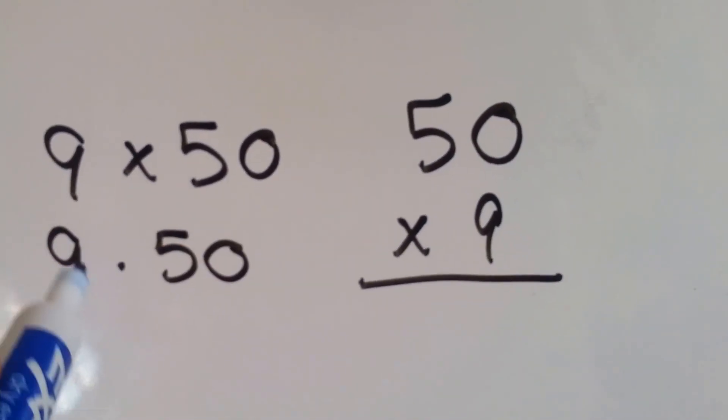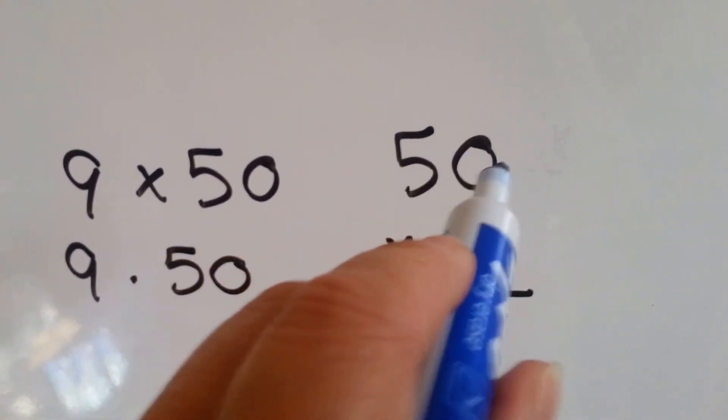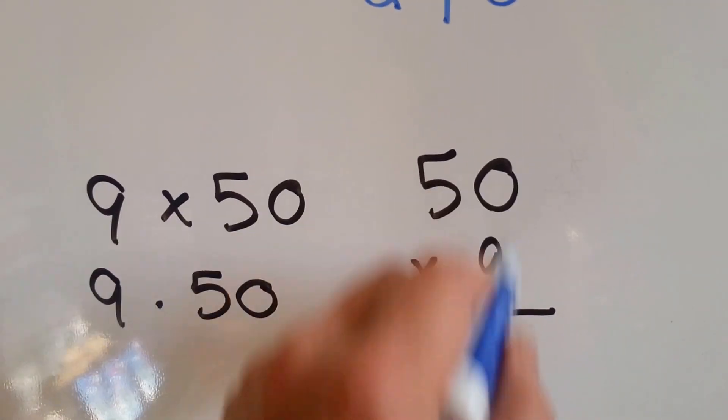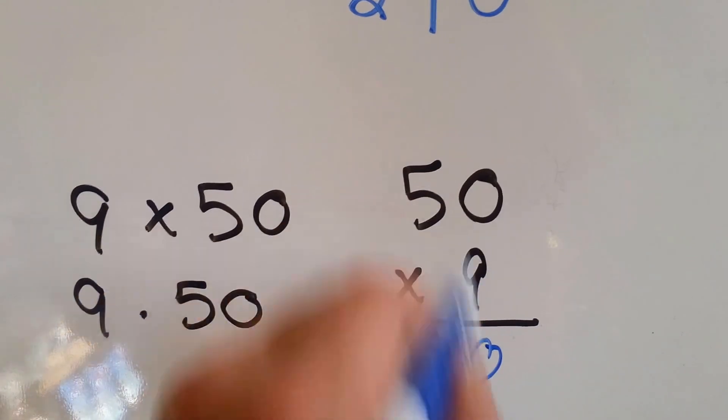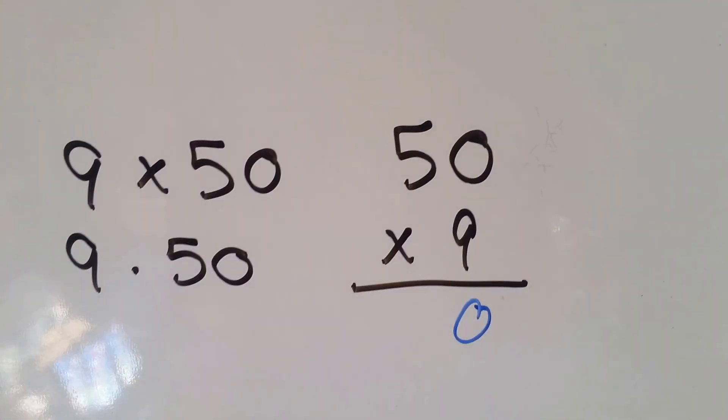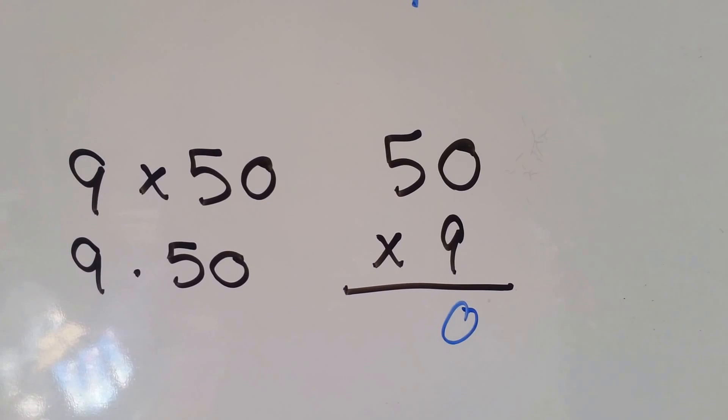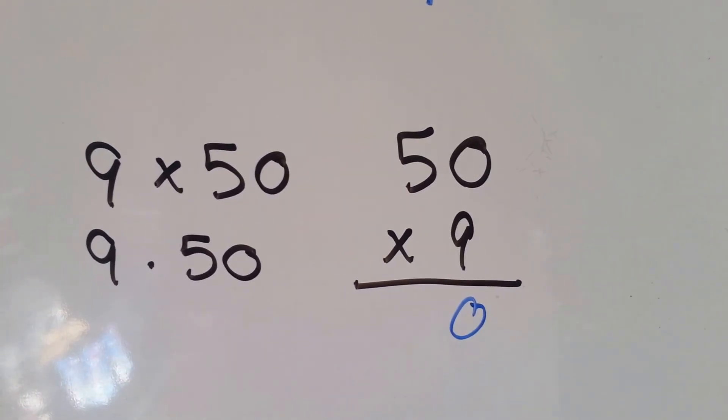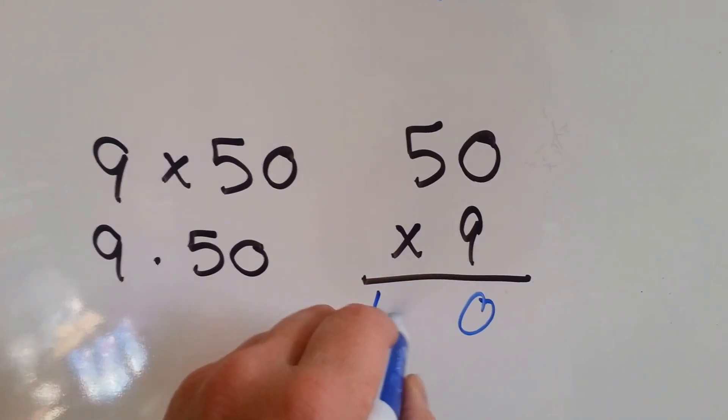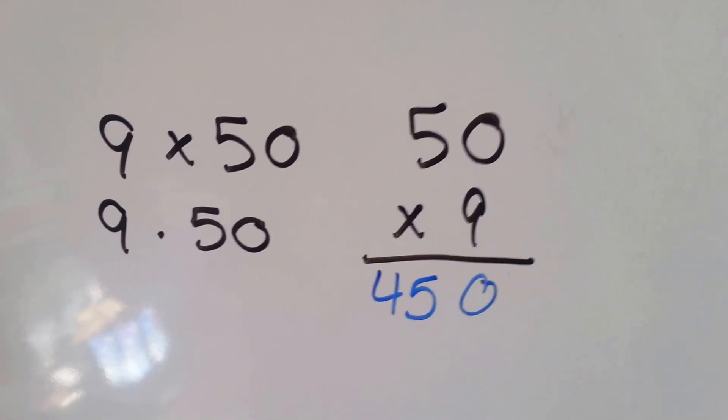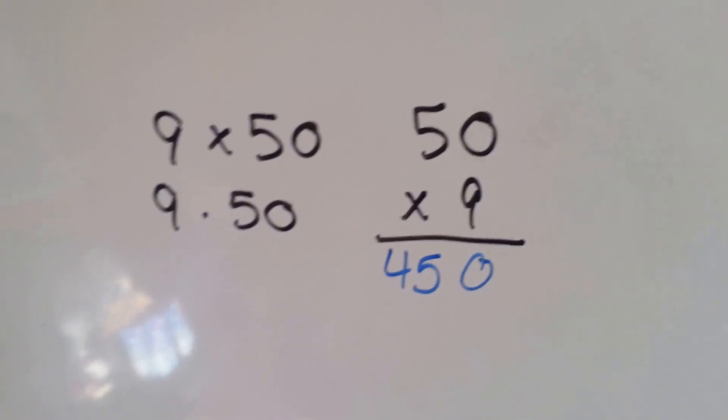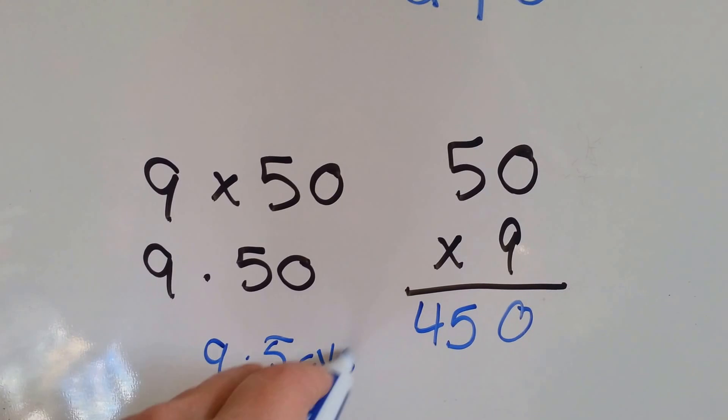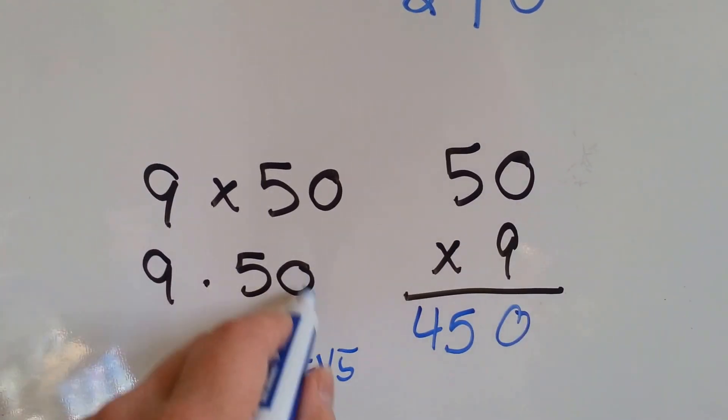9 times 50. 50 times 9. Same thing, backwards or forwards. So 9 times 0 is 0. 9 times 5 is... Do you know what that is? If you don't, you're going to have to count by 5's. 9 times 5 is 45. So the answer is 450. It's like saying 9 times 5, and then we add the 0 on the end.